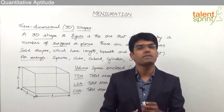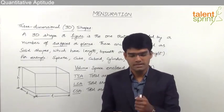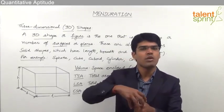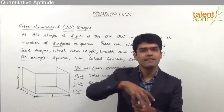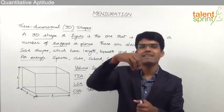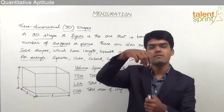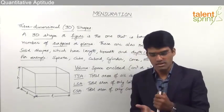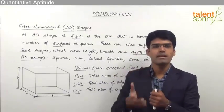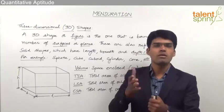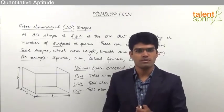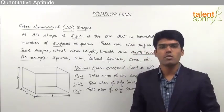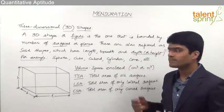A cone is like a special type of cylinder. The base is a circle, but as we move upwards, the radius of the circle decreases and it converges to a single point — the circle becomes a point as we move from bottom to top. That kind of figure is referred to as a cone.